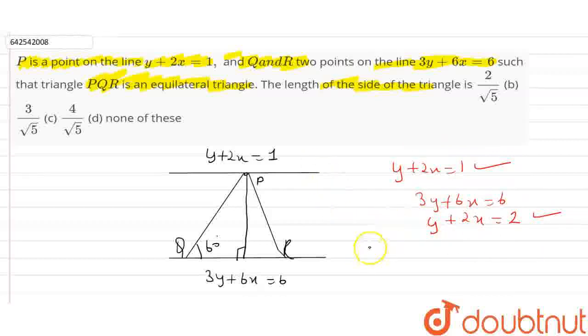So the distance perpendicular between these two parallel lines with the formula is 2 minus 1 upon under root 2 square plus 1 square. So it is equal to 1 upon under root 5.